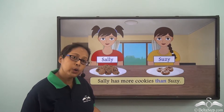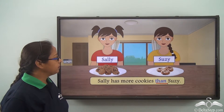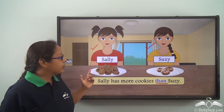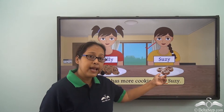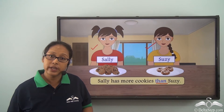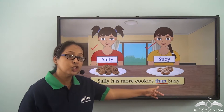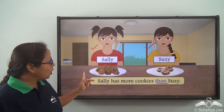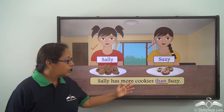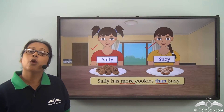Sally has more cookies than Susie. So 'than' is the preposition in this sentence. Let's take a look at the picture. Here is Sally and this is Susie. We can see that Sally has more cookies and Susie has less cookies. We are trying to bring out the difference between the number of cookies, so we have used the preposition 'than.' Note that we have used the comparative form of the adjective: 'more cookies.'